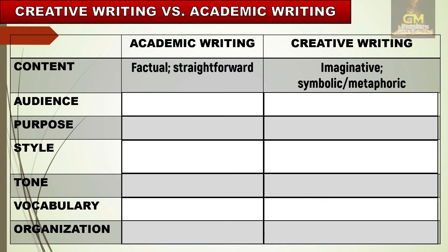In terms of audience, the audience of academic writing is specific — it is addressed to only a certain group of people — whereas creative writing is general. Creative writing is considered as an art, therefore it is addressed for everyone.